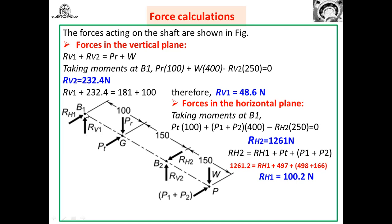From the figure: RV1 is the bearing B1 reaction in the vertical plane, RH1 is in the horizontal plane. Similarly, RV2 and RH2 are the reactions at bearing B2. At gear G, Pt acts horizontally and Pr acts vertically. The pulley weight W acts vertically downward and P1 + P2 acts horizontally.